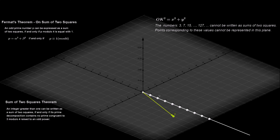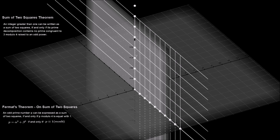These are the numbers identified by the sum of two squares theorem that cannot be written as the sum of two squares. For example, the numbers 3, 7, 15, 127 cannot be written as sums of two squares. If M and N are two points associated with two complex numbers belonging to this discrete complex plane, then their sum and their product are also complex numbers belonging to this discrete complex plane.